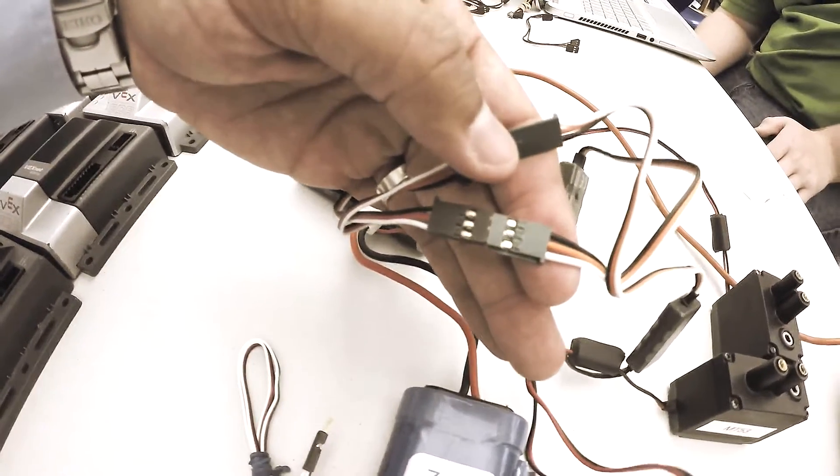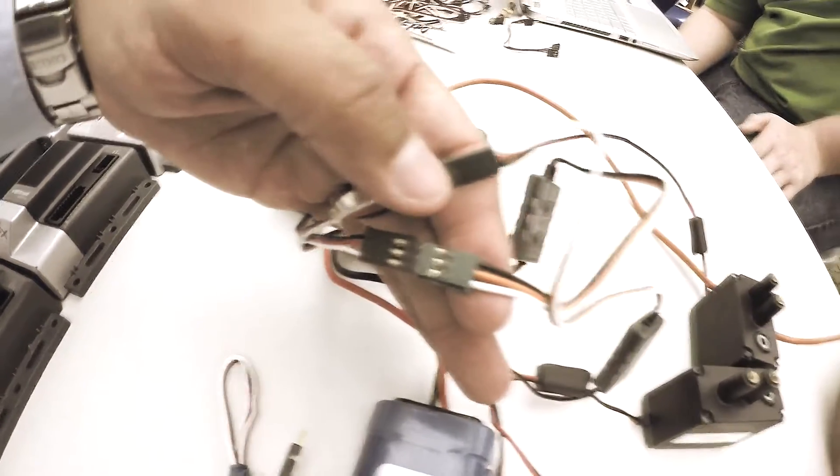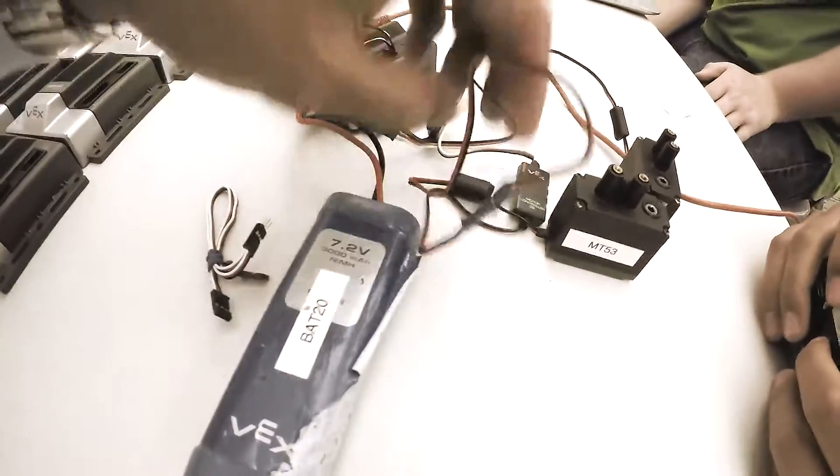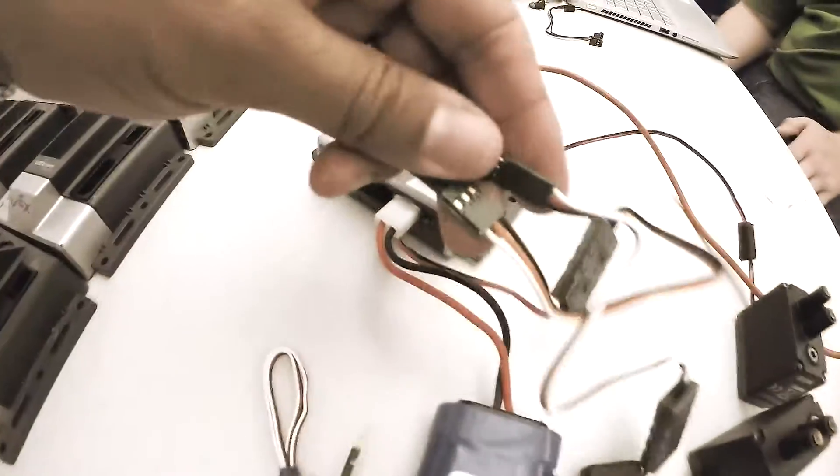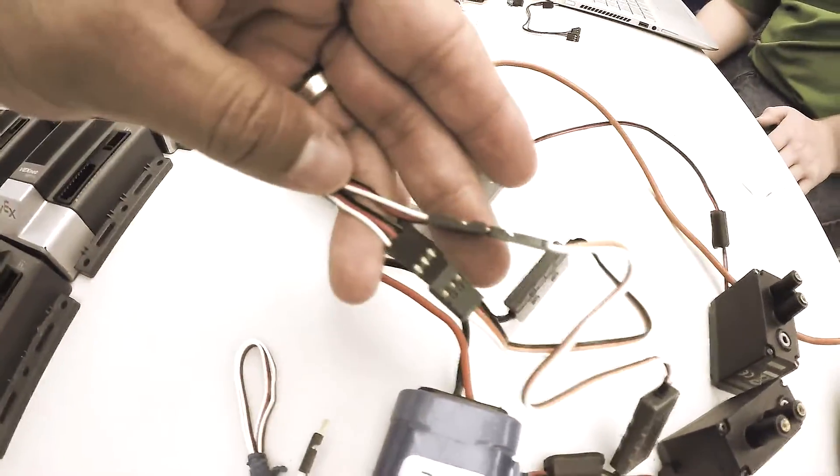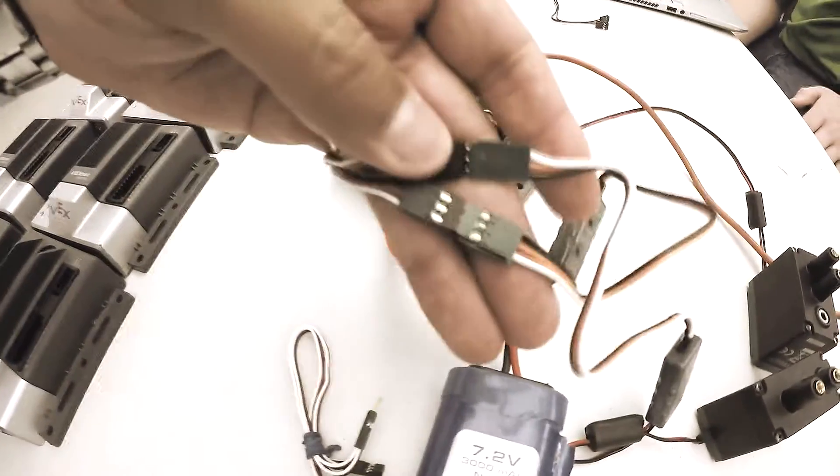Now one thing you got to remember with connecting motor controllers to extension wires is that the colors have to match in order for it to actually send the correct signal. It's not like putting a motor with motor controller and being opposite. The colors have to actually go the same direction. So right here we have that connected, you can see it right here.